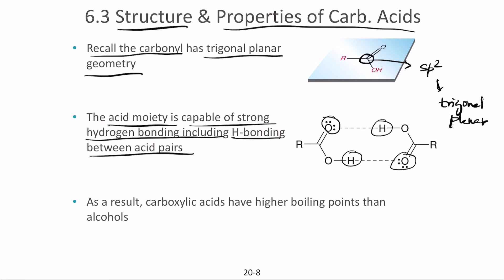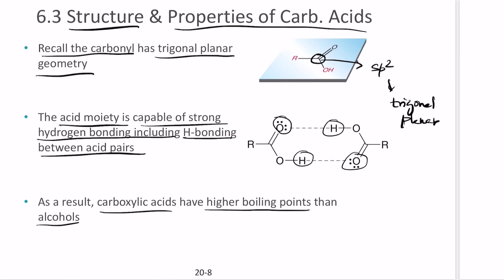As a result, carboxylic acids have higher boiling points than alcohols. Alcohols form only one hydrogen bond per molecule, whereas carboxylic acids can form multiple hydrogen bonds, increasing the chance of intermolecular interaction and raising the boiling point.